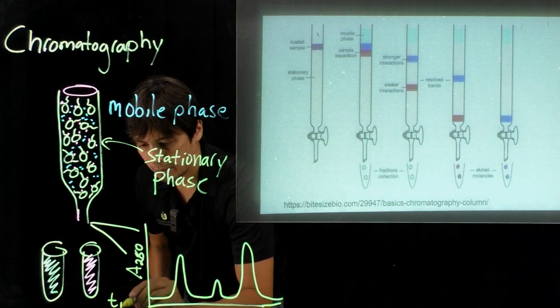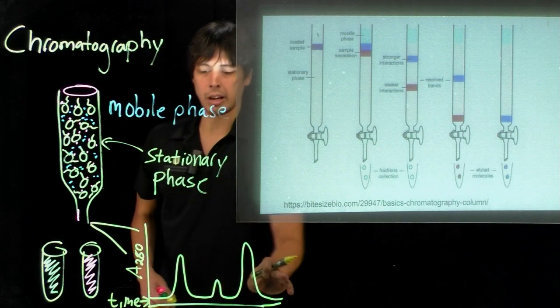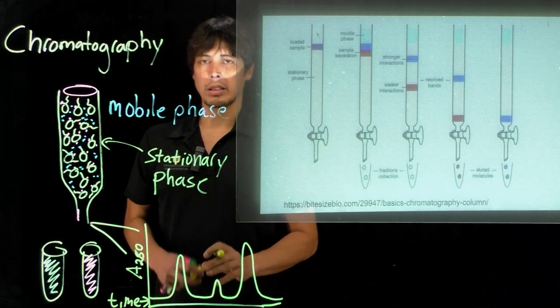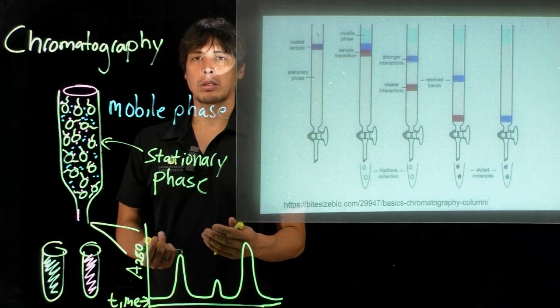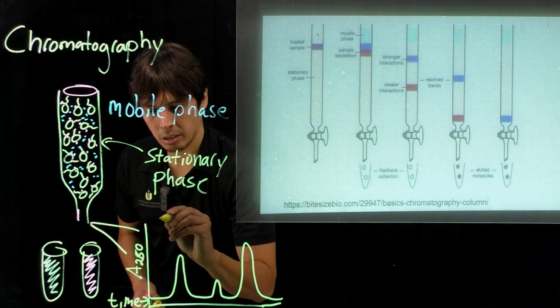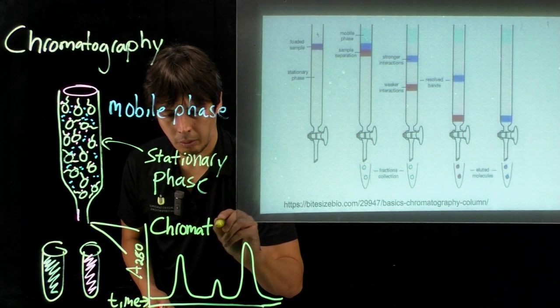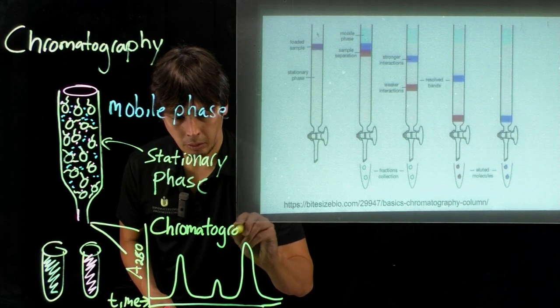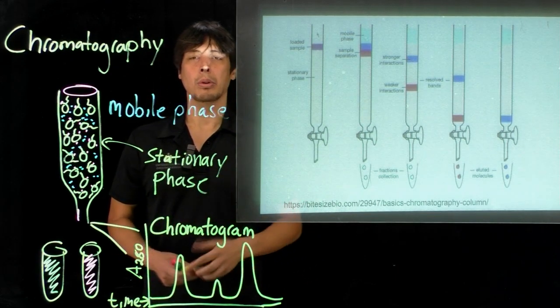The x-axis is time, increasing time. We can see what proteins are eluting at what times as they come off the column. This is called a chromatogram, and this helps us determine how well we're able to separate proteins from each other.